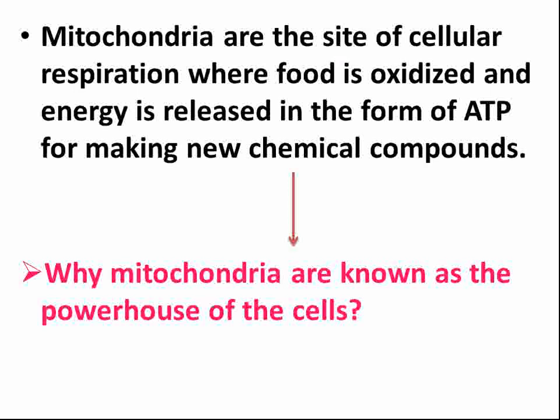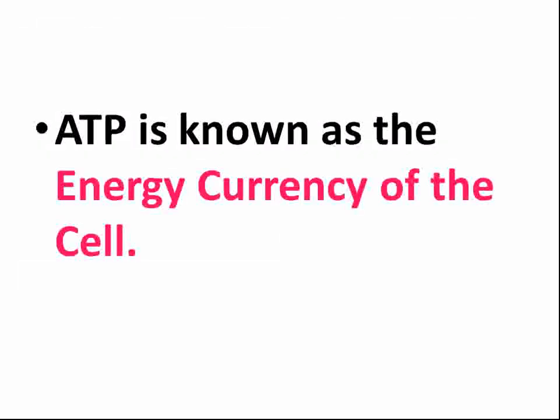Mitochondria are known as the powerhouse of the cell because they are the site of cellular respiration where food is oxidized and energy is released in the form of ATP, which is used for making new chemical compounds. ATP is also known as the energy currency of the cell.